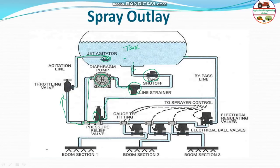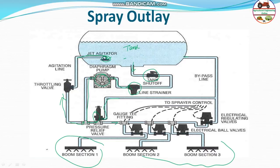After the pressure relief valve, liquid is directed through a filter and fittings to the distribution line, then through ball valves to boom sections. In a boom sprayer there may be three foldable or multiple booms. This is a mechanical sprayer — fully automated — and represents the complete spray outlet and spraying pattern.